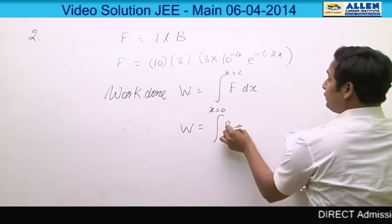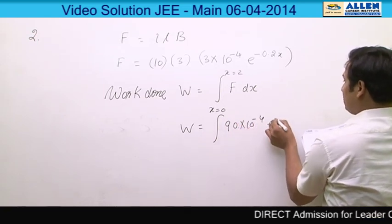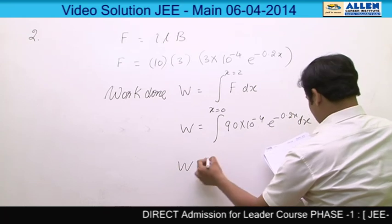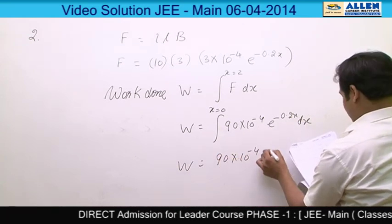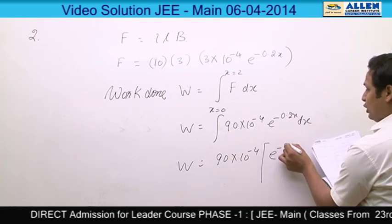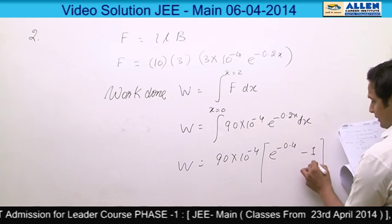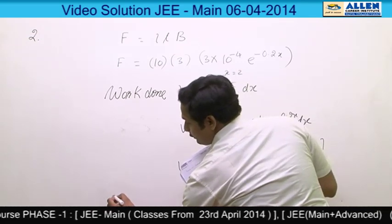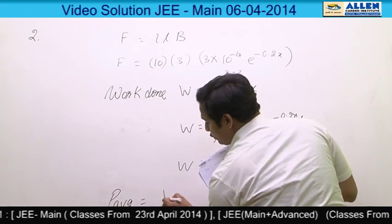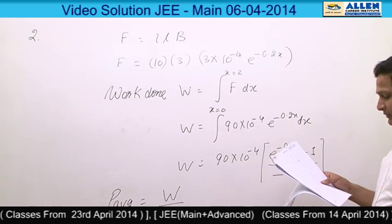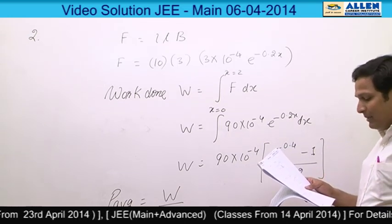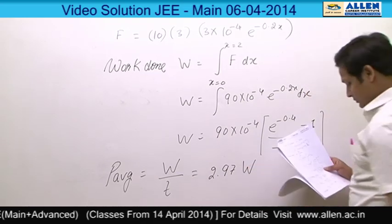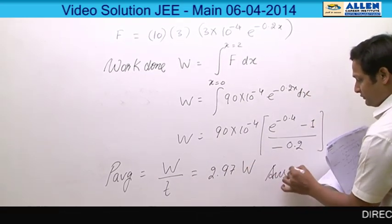After putting the values, W equals 3×3×3 = 9, so 90×10⁻⁴ times e to the power −0.2X dx. Solving it, W equals 90×10⁻⁴ times (e^(−0.4) − 1) divided by −0.2. Now we calculate average power P_avg, which is total work done divided by time taken. Time taken is given as 5×10⁻³ seconds. Solving it, we get 2.97 watts. Hence the answer to this question is option 4.